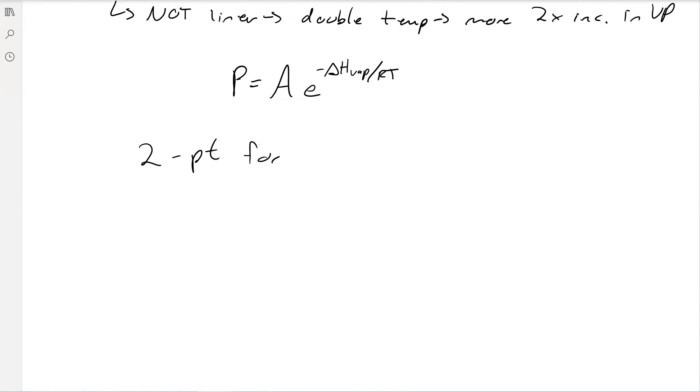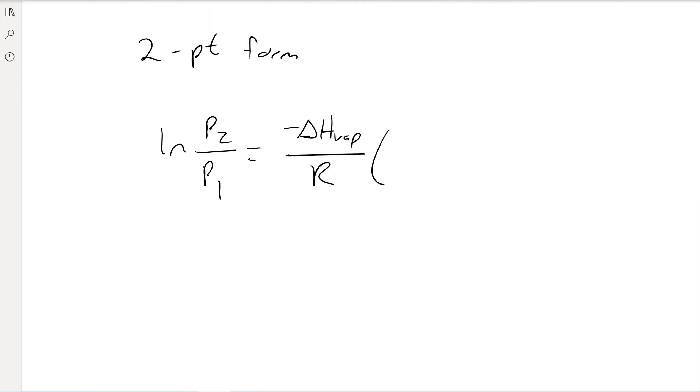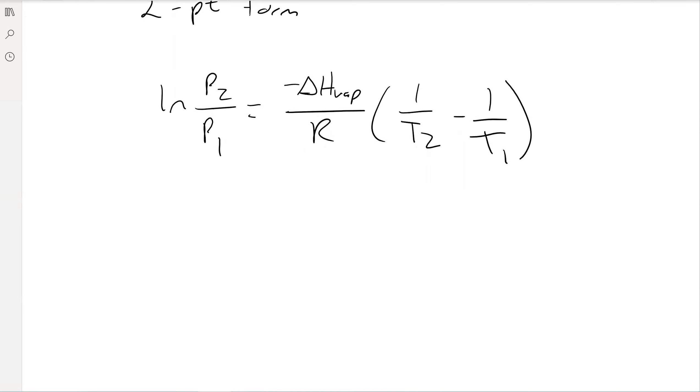The two-point form is more useful. It allows us to input two points of data and then find some kind of unknown. The general equation is the natural log of P2 over P1 equals negative delta H of vaporization divided by R times 1 over T2 minus 1 over T1. If you look at this equation online, you might have some places where these are flipped or you might not have a negative here. It's the same equation, just reorganized a little bit. It doesn't matter which equation you use. Just don't mix and match them because then you'll end up with the wrong answer.